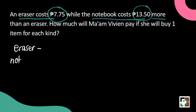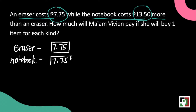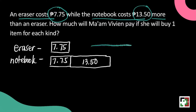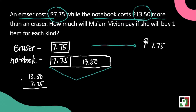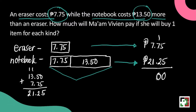We have to show that in our model. Let's write eraser and notebook here, and draw a box with 7 pesos and 75 centavos inside. Let's take note that the notebook costs 13 pesos and 50 centavos more than the eraser, and it has to be shown in our model. Let's find the price of the notebook by adding 7 pesos and 75 centavos and 13 pesos and 50 centavos, because we cannot add it to the eraser if we don't know the price of the notebook. The price of the notebook is 21 pesos and 25 centavos.